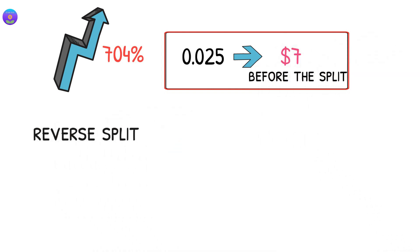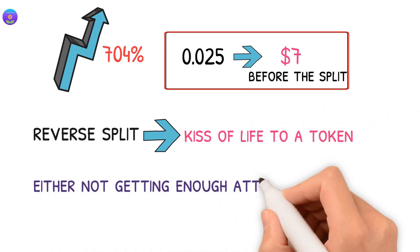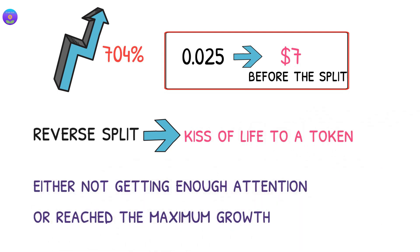The reverse split is considered the kiss of life to a token that is either not getting enough attention or reached the maximum growth such as Shiba.